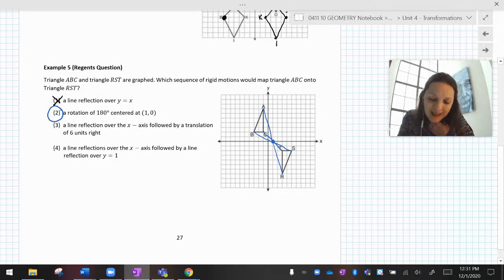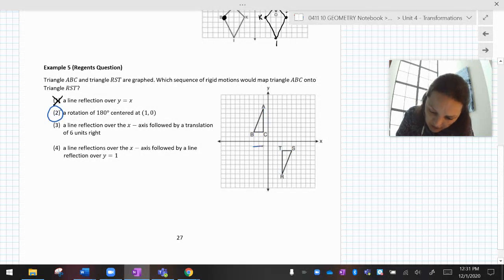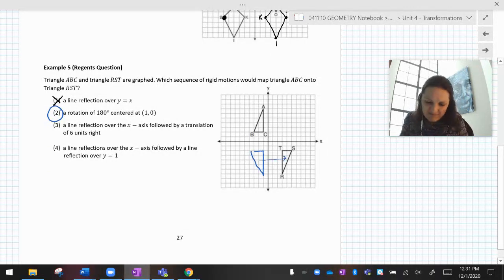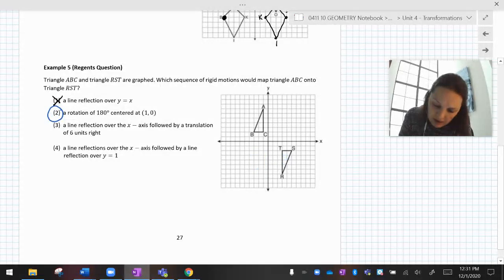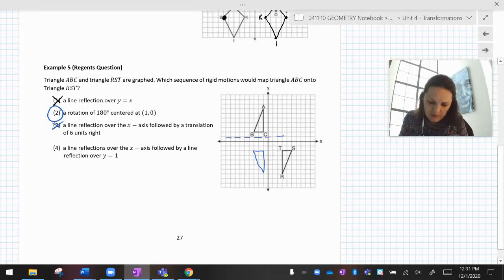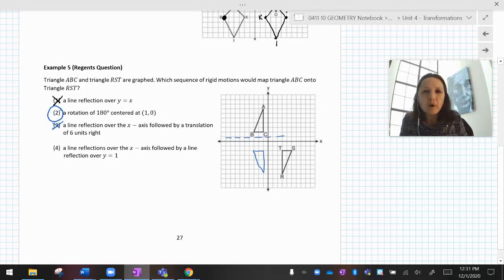A reflection over the x-axis and then six units to the right. Let's test it. Well, if I reflect this over the x-axis, it's going to look something like this and then slide it. Nah, that's not right. Okay. So this isn't it. And then a reflection over the x-axis. Okay. I'd still end up like here-ish and then a reflection over y equals one. Well, y equals one is here. Now, if I flip back over y equals one, it ends up on top. This is the answer.